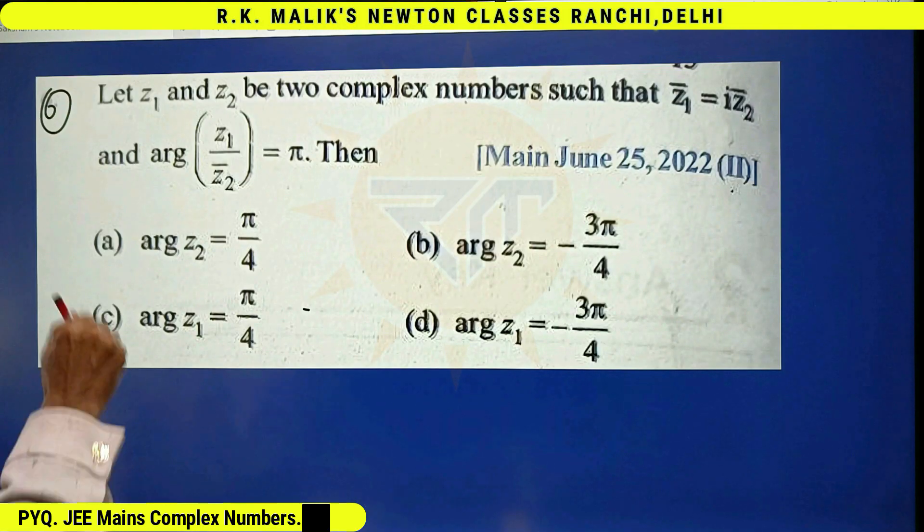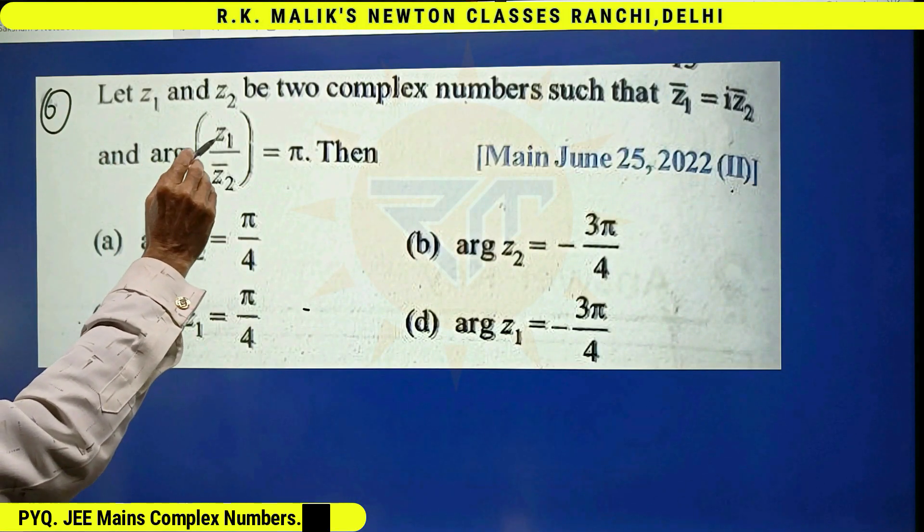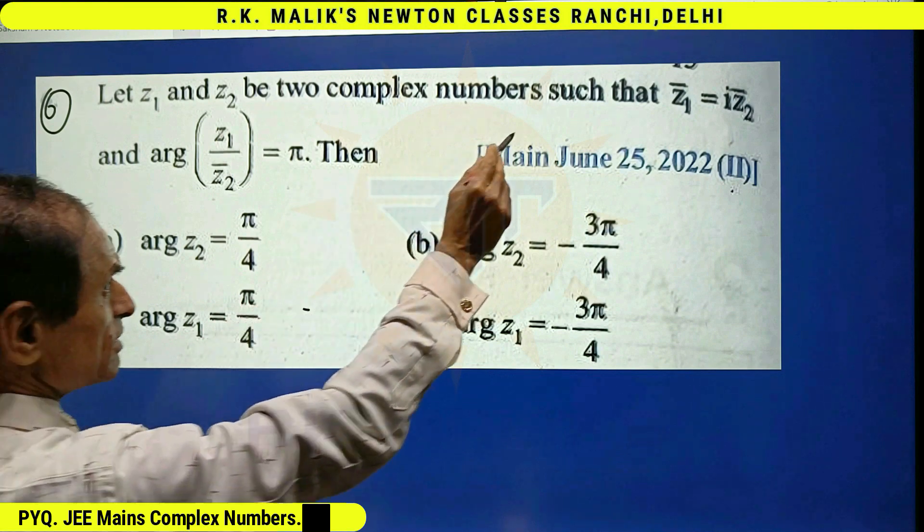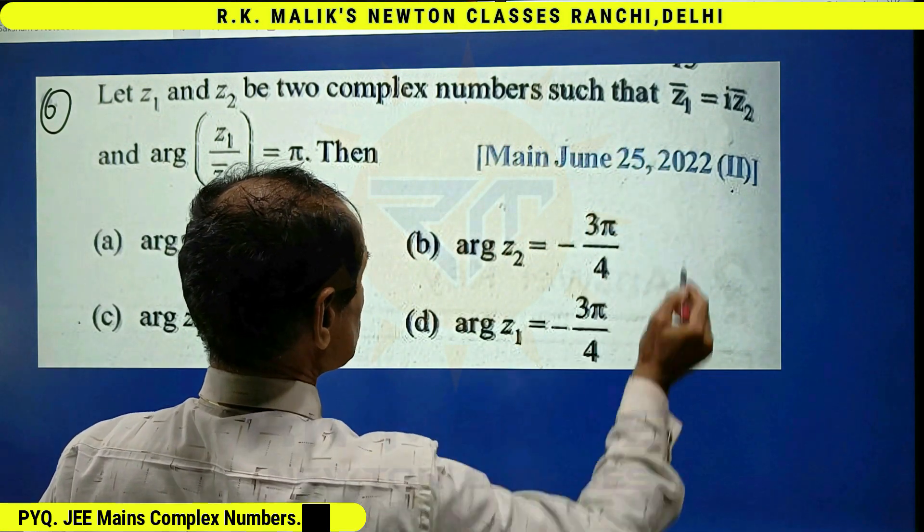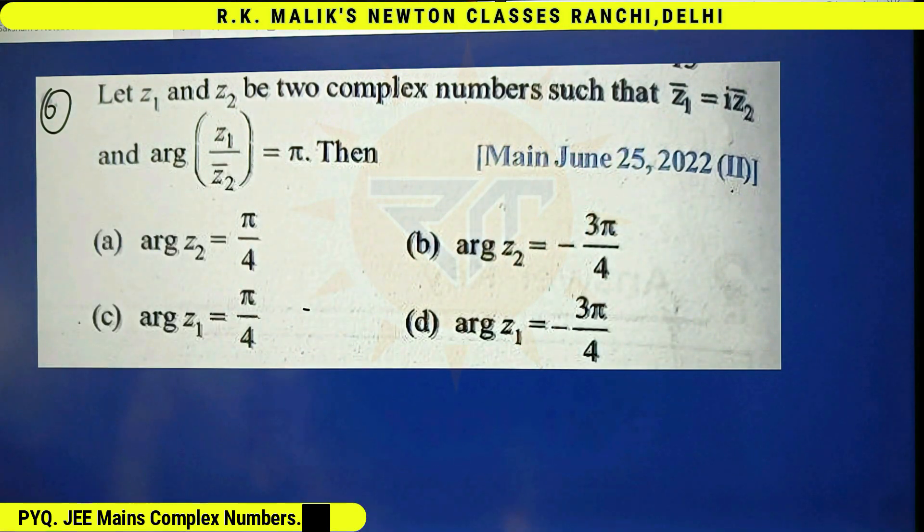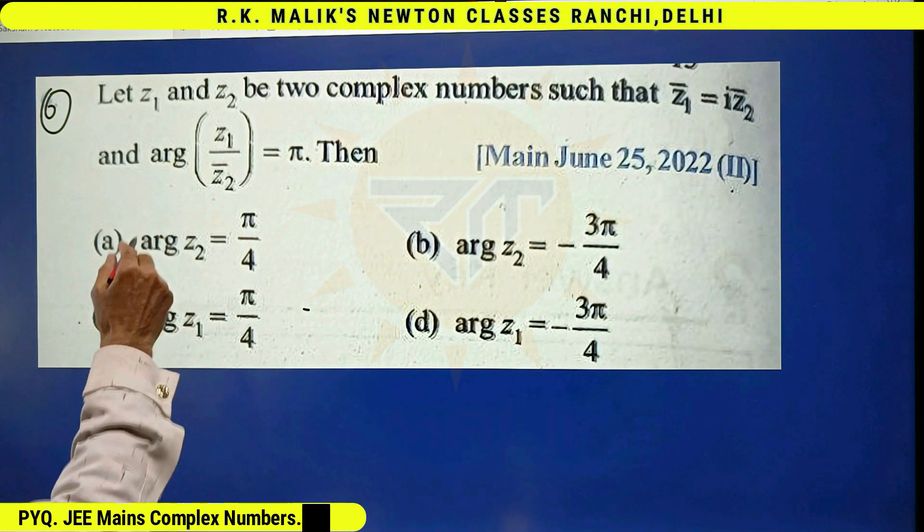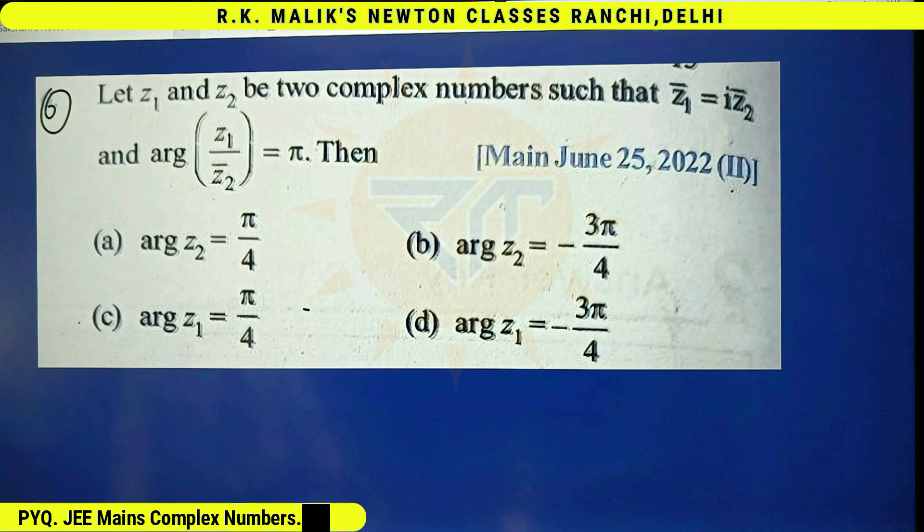In this question, it is given that let z1 and z2 be two complex numbers such that z1 bar is equal to i z2 bar. Then argument of z1 upon z2 bar is pi.